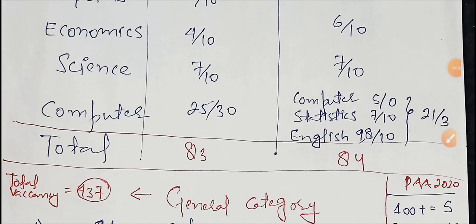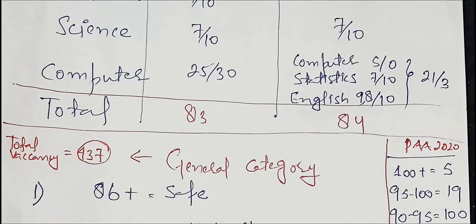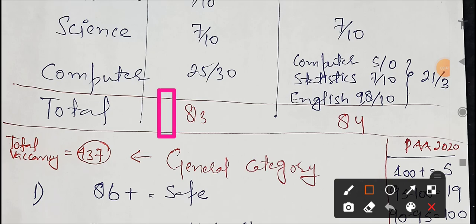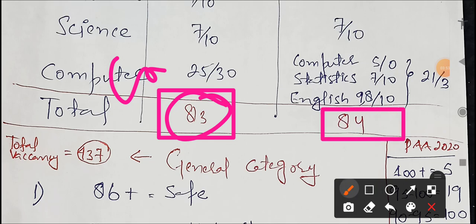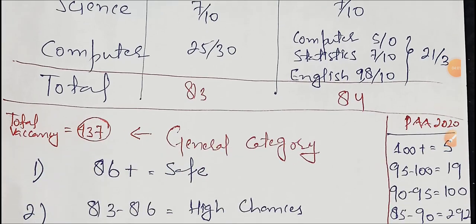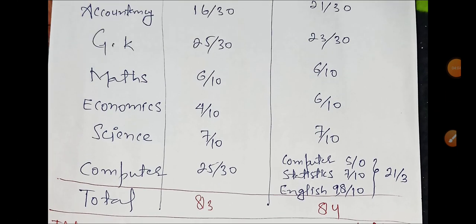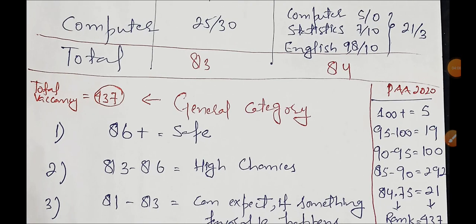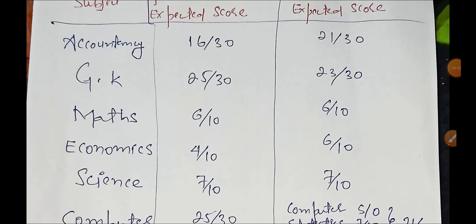If we talk about the final average safe score and safe attempt, students took 83 marks on average. The serious candidates who were in competition scored 83 on average. According to this analysis, the average becomes 84. This year there will be one mark increase, and the cut-off will be slightly high because vacancies are less and the question paper level was moderate.